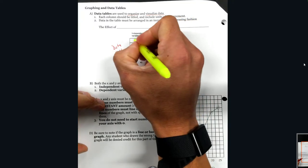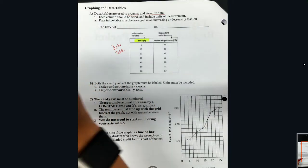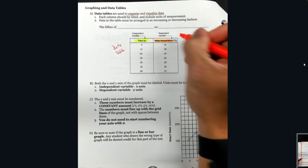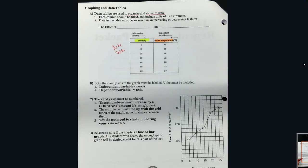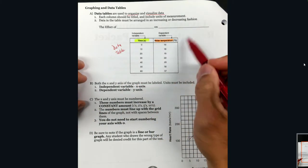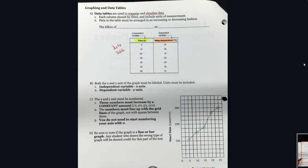We have two groups of data that we have collected in this experiment. The data table must be arranged in an increasing or decreasing fashion so the numbers make sense, and we can obviously take a look, analyze, and then come to our conclusions.